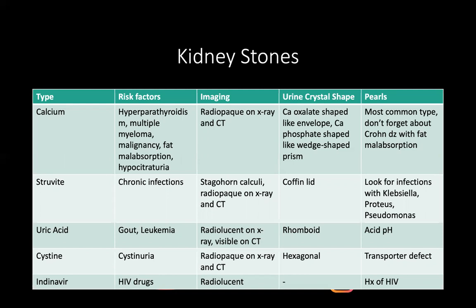Hypocitraturea is the exact opposite phenomenon — citrate is protective against stones because it binds to calcium, preventing calcium stone formation. When you have less citrate, you're more predisposed to calcium stones. On imaging, calcium stones are bright and dense — radiopaque on X-ray and CT. Crystal shape is important: envelope shape means calcium oxalate; wedge-shaped prism means calcium phosphate. About 70% of stones are calcium oxalate, 10% calcium phosphate. Don't forget the association with Crohn's disease and fat malabsorption.